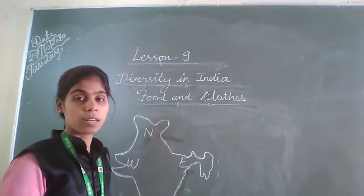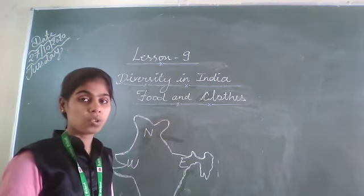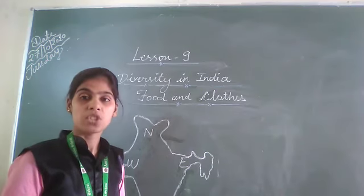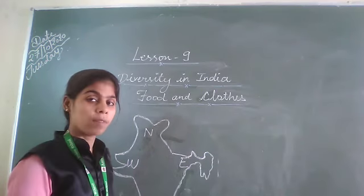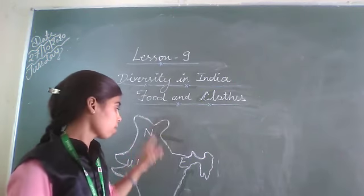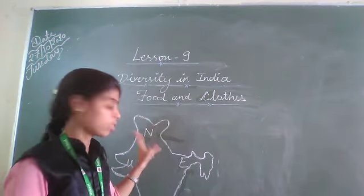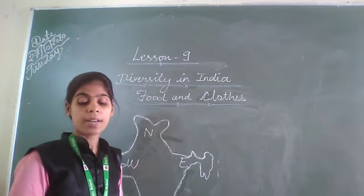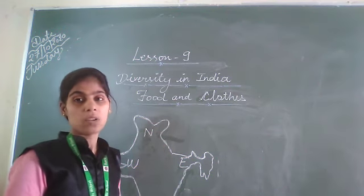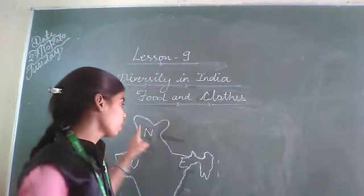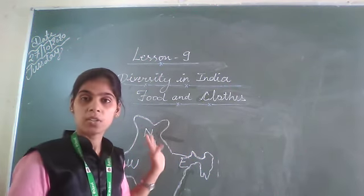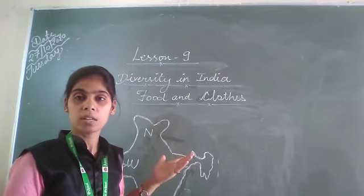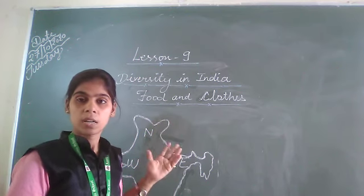Next, Makki ki Roti and Sarson ka Saag are famous in Punjab, which is one of the northern states. Next is Dum Aloo, which is related to Jammu and Kashmir. Jammu and Kashmir is also a union territory in our country.